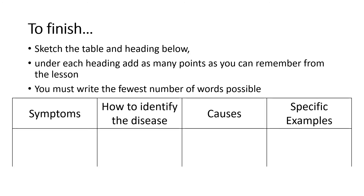To finish off, sketch a table with four headings: symptoms, how to identify the disease, causes, and specific examples. Then write down as much information as you can under each heading, but aim to use the fewest number of words possible — as much information with the fewest words.